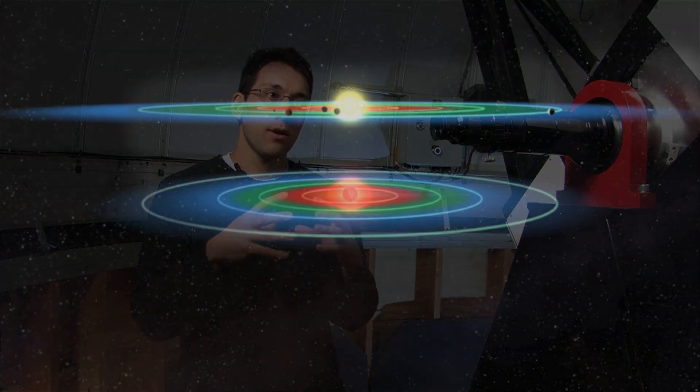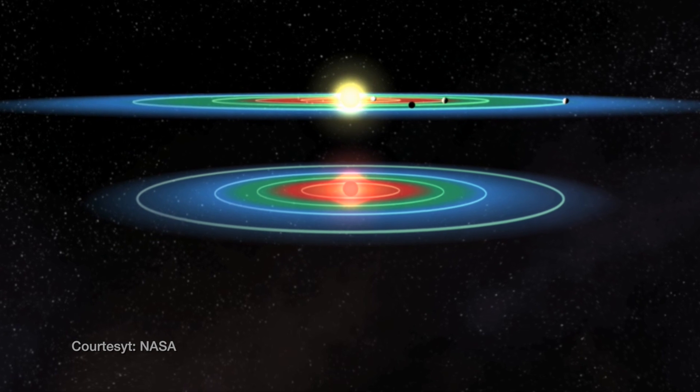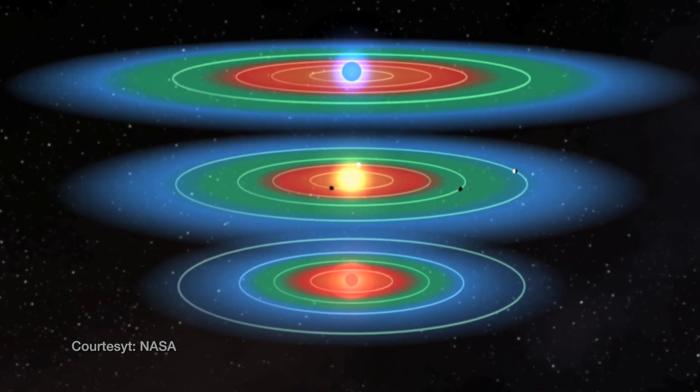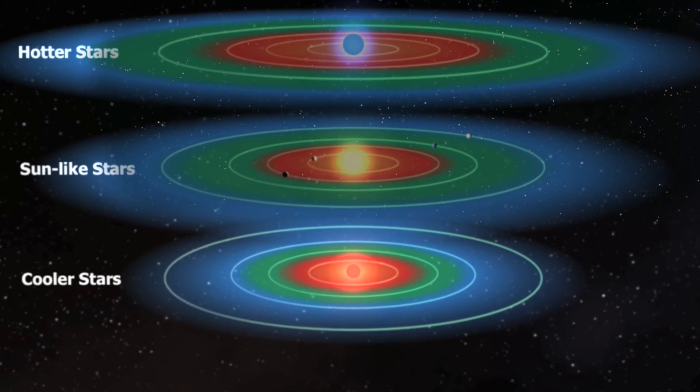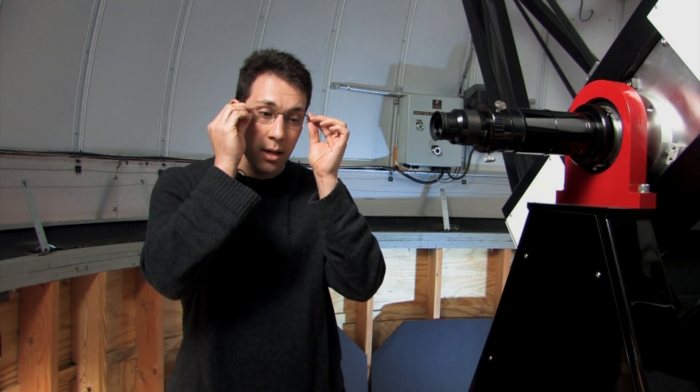What's also interesting about this discovery is the star itself is what we call an M star, a very small star that is fainter and gives off less light. The habitable zone around this star is much closer. Kepler was able to detect this planet and the other four planets in the system that are a little bit too close to the star and too warm. These M stars burn hydrogen forever; they live essentially forever.